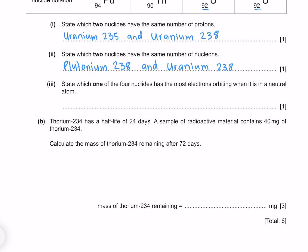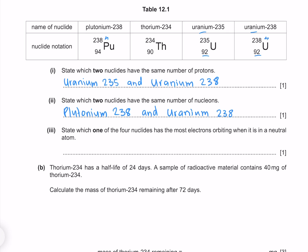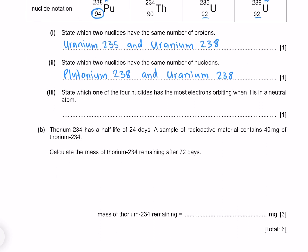State which one of the four nuclides has the most electrons orbiting when it is in a neutral atom. If the atom is neutral, then the amount of electrons is going to equal the amount of protons, which is given by our atomic number. The largest of which is our 94 from our plutonium-238.